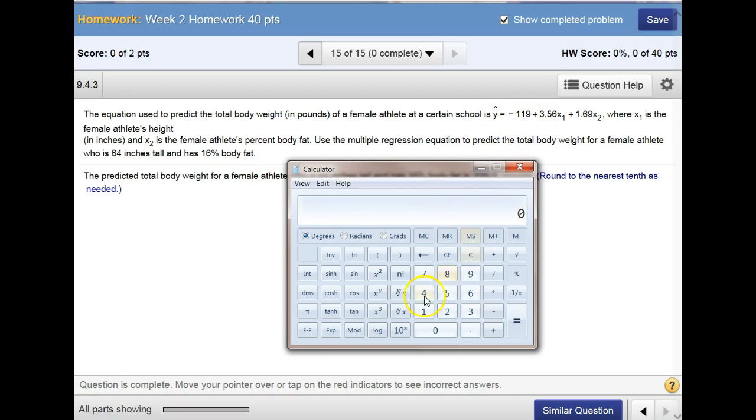All right. Here's my equation. So I'd say 119. Oh, it's a negative though. Can't forget that. 119. And on this calculator, I put in the 119, then I hit the plus minus button. There it is. So negative 119 plus 3.56 times the height. What was her height? 64 inches. 64.